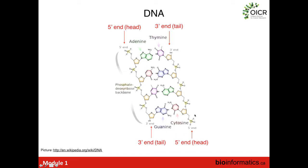We could also read the same DNA molecule in the opposite direction, starting from the five prime end of the complementary strand and going to the three prime end. We say the two sequences are reverse complements of each other — we can infer the sequence of the opposite strand by taking the complement of every base and then reversing the sequence, because we always want to represent sequences from five prime to three prime.